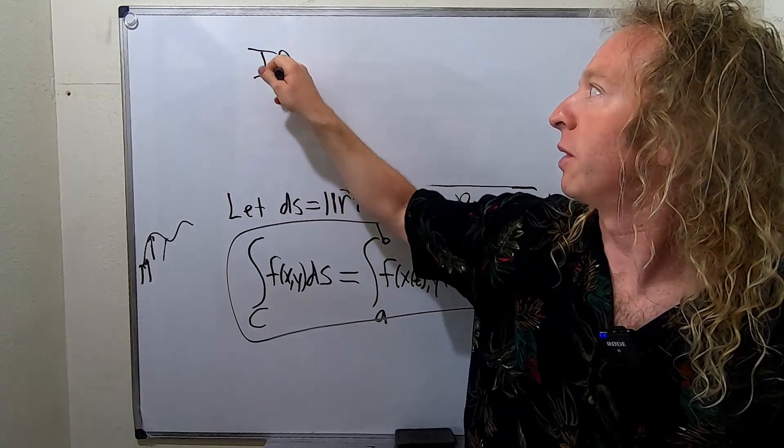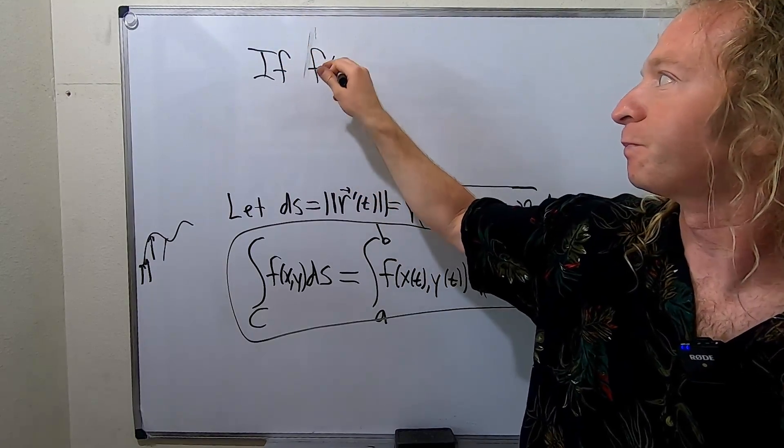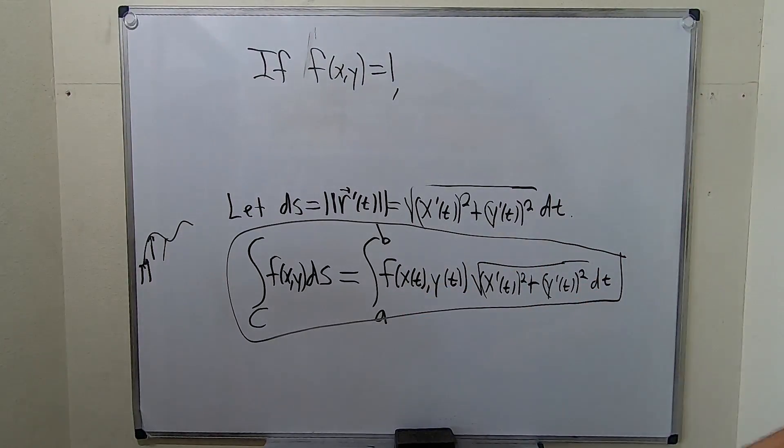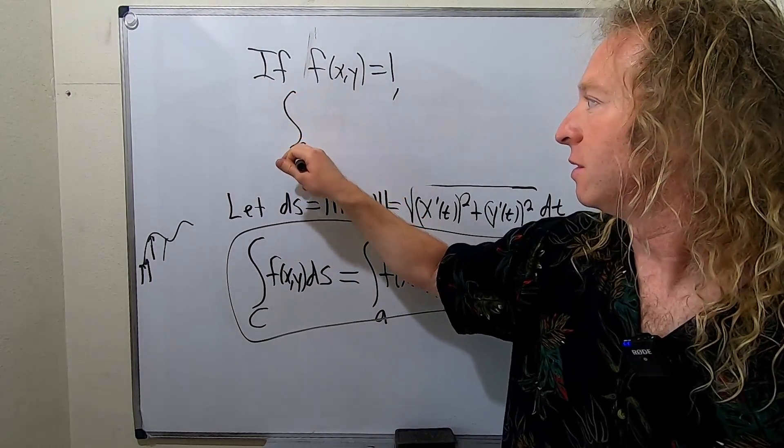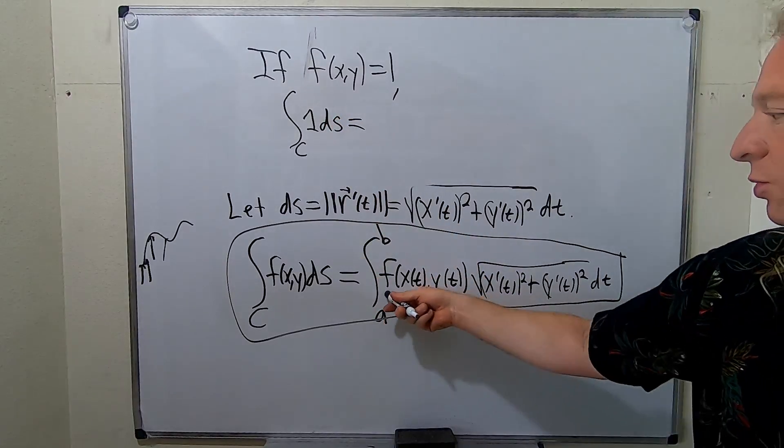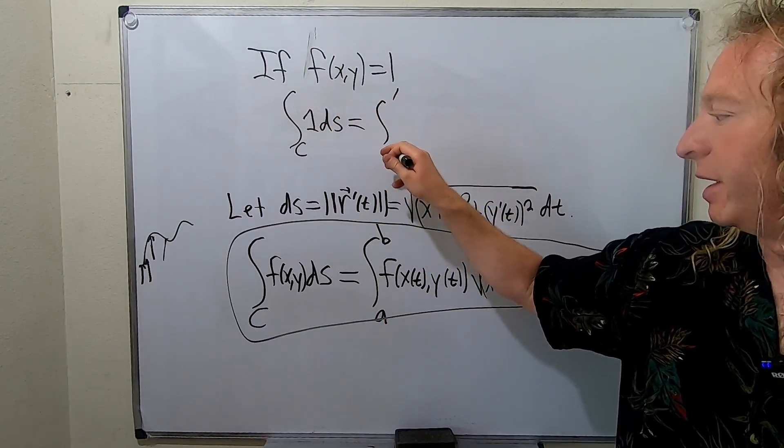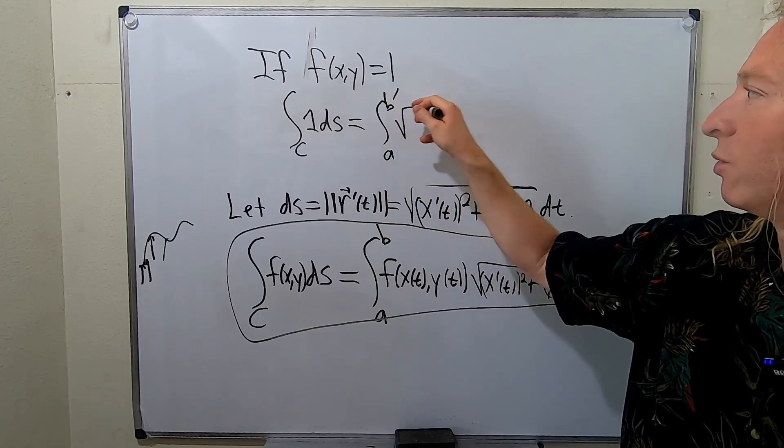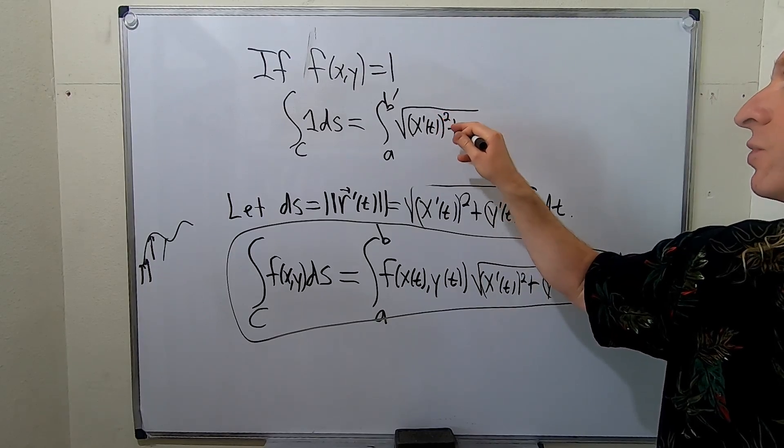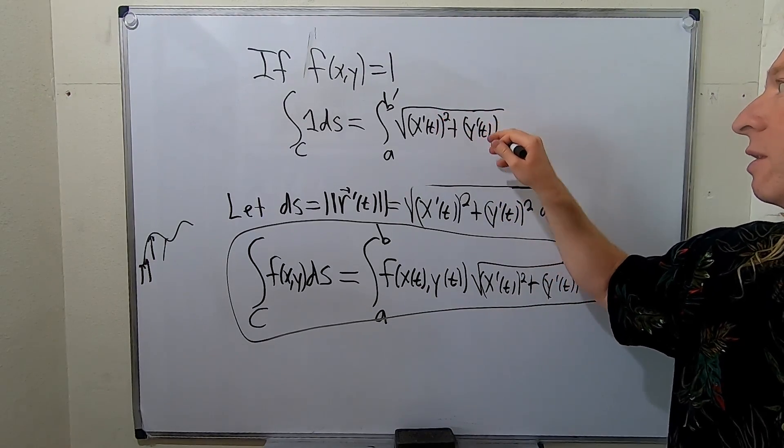So the first case I want to talk about is if your function is equal to one. So if f(x,y) is equal to one, then what would happen here? You would just get one ds like this. And then in this case, this would just be one. So you would get the integral from a to b of the square root of x'(t) quantity squared plus y'(t) quantity squared.